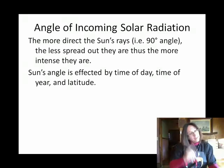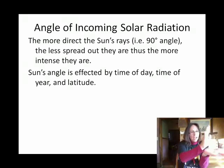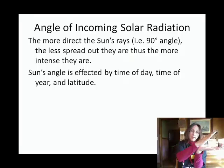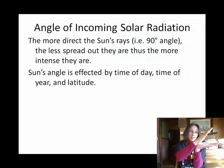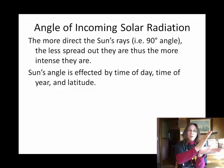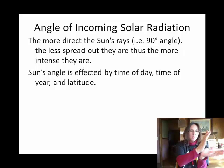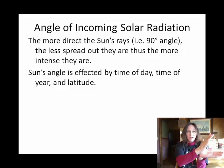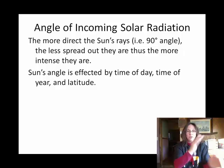The angle the sun makes with the horizon makes a difference with regard to a few things. Among them is what we call beam spreading and beam depletion — those two things.